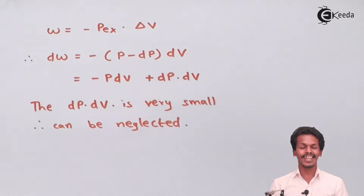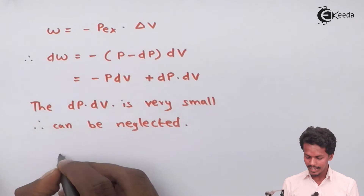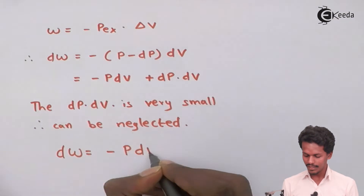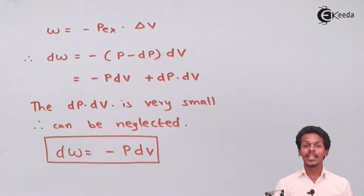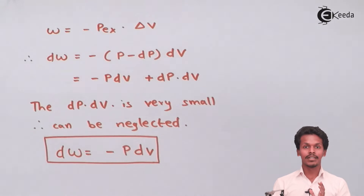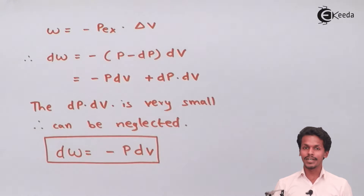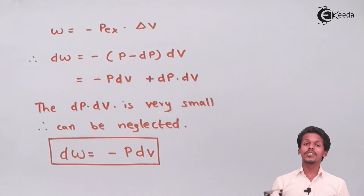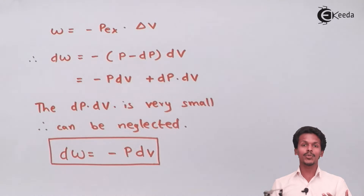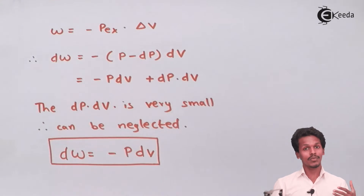Therefore, the small work done during each step is: dW = −P dV. This is the small work done during each step as the gas expands isothermally and reversibly. In a reversible process, the opposing force and driving force differ by an infinitesimally small amount, which is why maximum work is obtained. To get the total maximum work, we integrate all these small steps from V1 to V2.